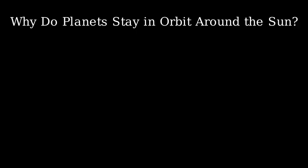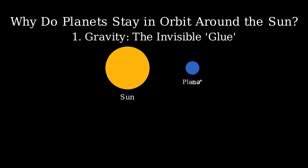Let's start with the fundamental force that keeps planets in orbit: gravity. Gravity is like an invisible glue that connects all objects with mass in the universe. According to Newton's Law of Universal Gravitation, every mass attracts every other mass. The Sun, with its enormous mass, pulls on each planet, creating a gravitational force directed inward.